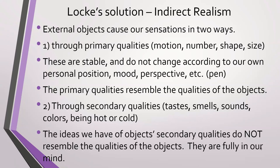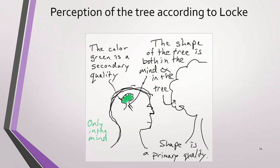So our secondary qualities that we experience are entirely in our mind. So now we could redraw this description of experiencing the tree a little differently. So the shape of the tree is in the external world and it's also in our mind. And so the shape of the tree resembles in our mind, it resembles the shape in the external world.